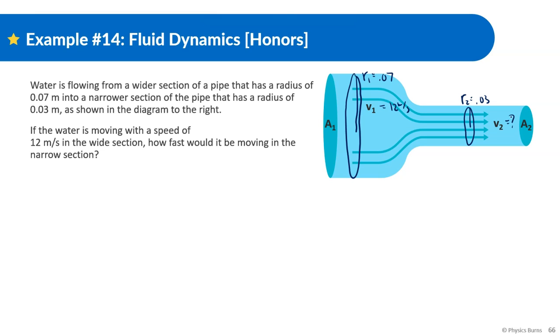So first thing that we have to do is we need to find the area. We can think about what is the area of a circle, and hopefully we know, but if not, you hopefully have a formula sheet that can help you: pi r squared. So for R1, A1 is going to be equal to 0.07 squared times pi, which is going to give us 0.015 meters squared. A2 is going to give us 0.03 squared times pi, and that's going to give us 0.0028 meters squared.